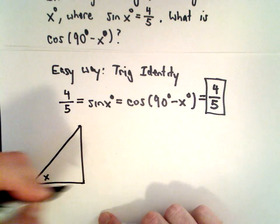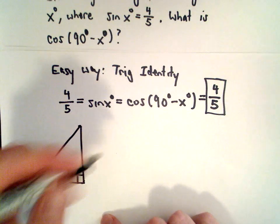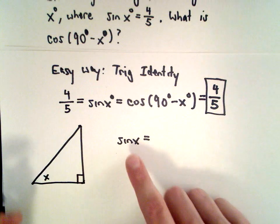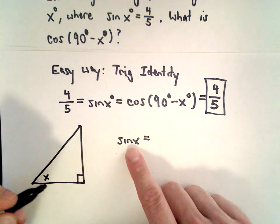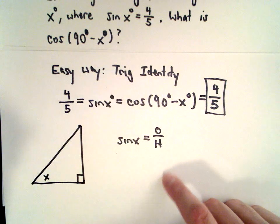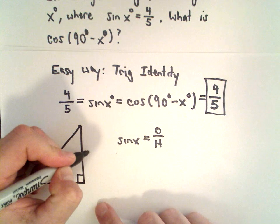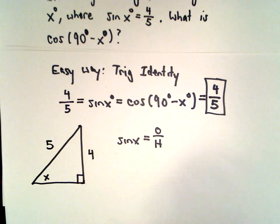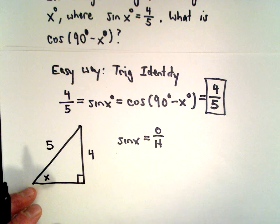So there's x, there's my right triangle. Remember sine of x in terms of right triangles: sine is the ratio of the opposite side to the hypotenuse. So I know that the opposite side has a value of four and the hypotenuse has a value of five.